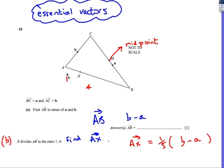not 1 out of 4, but 1 out of the total distance, which is 5, of AB. Well, we know that AB was b minus a, therefore AX is 1 fifth of b minus a.